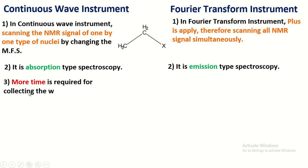More time is required for taking the whole spectra by using continuous wave instrument. But less amount of time is required by using Fourier transform instrument.